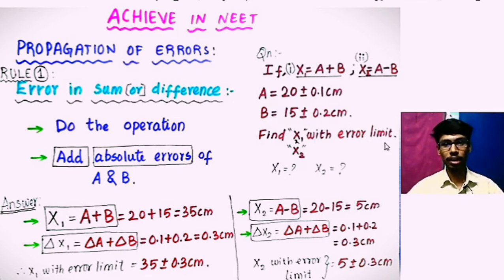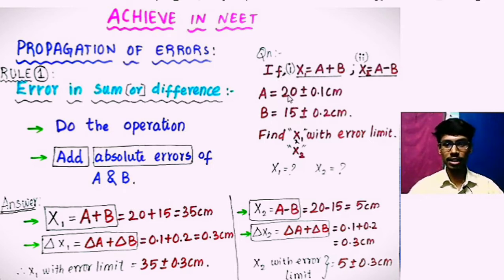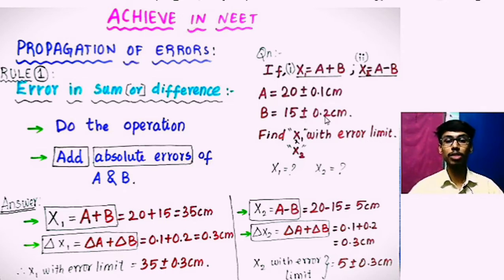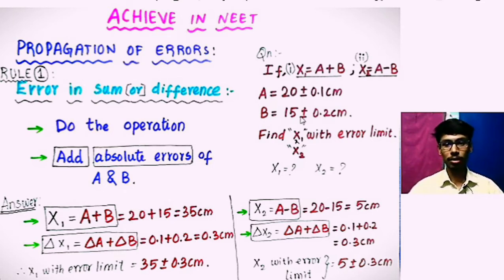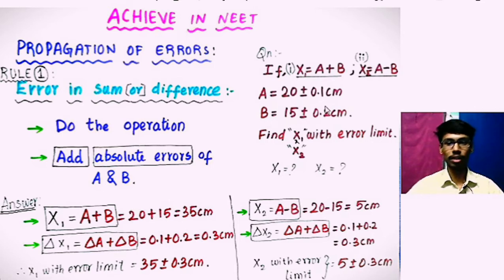So what do we have? The values of a and b. Here, 20 is the real value of a and 15 is the real value of b. The plus or minus 0.1 and plus or minus 0.2 are the absolute errors. So for example, a could be 20.1 or 19.9. This is the value of a and b with their error limits — these are absolute errors.